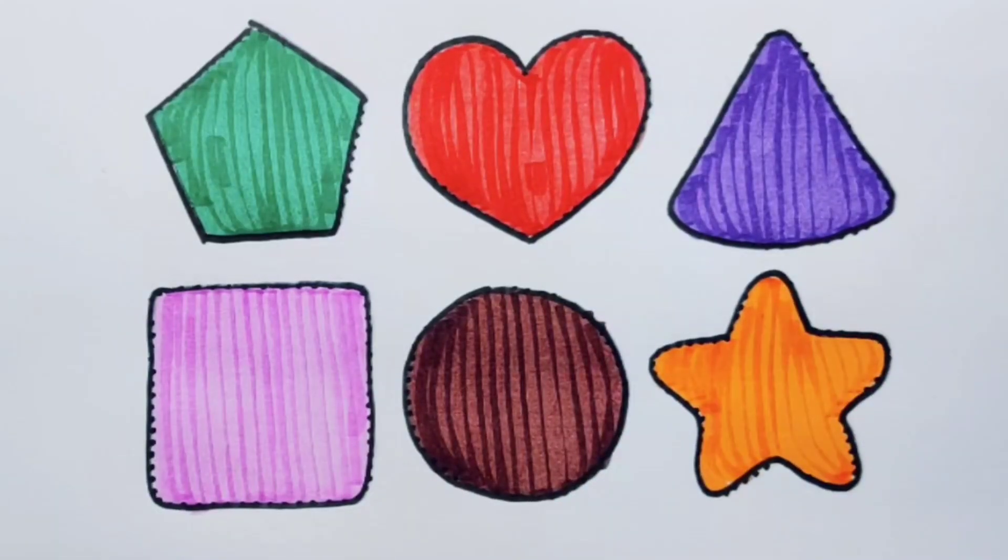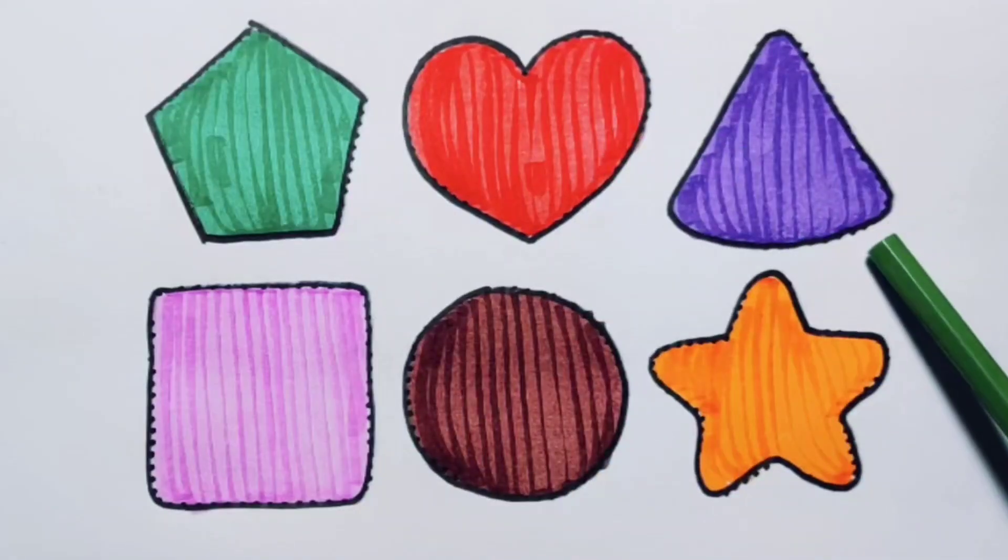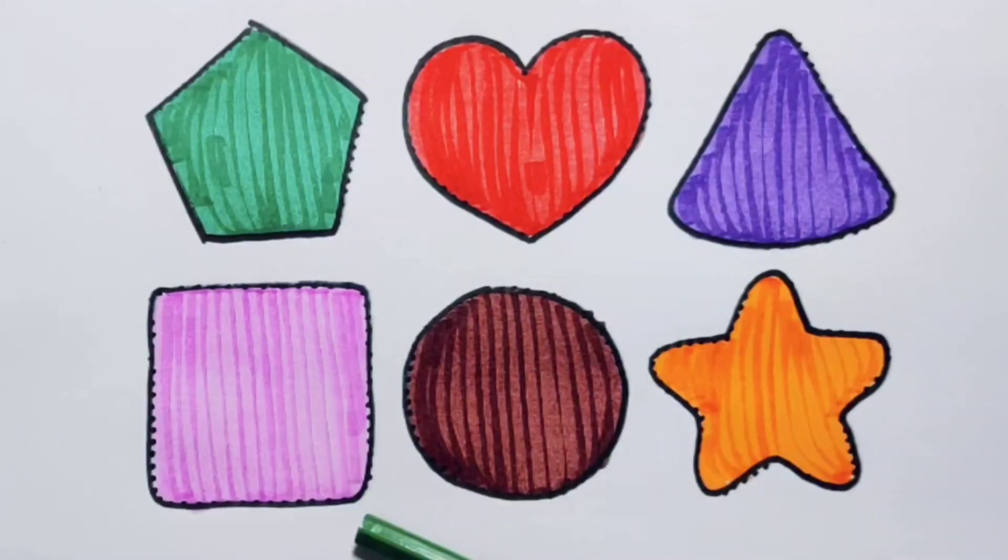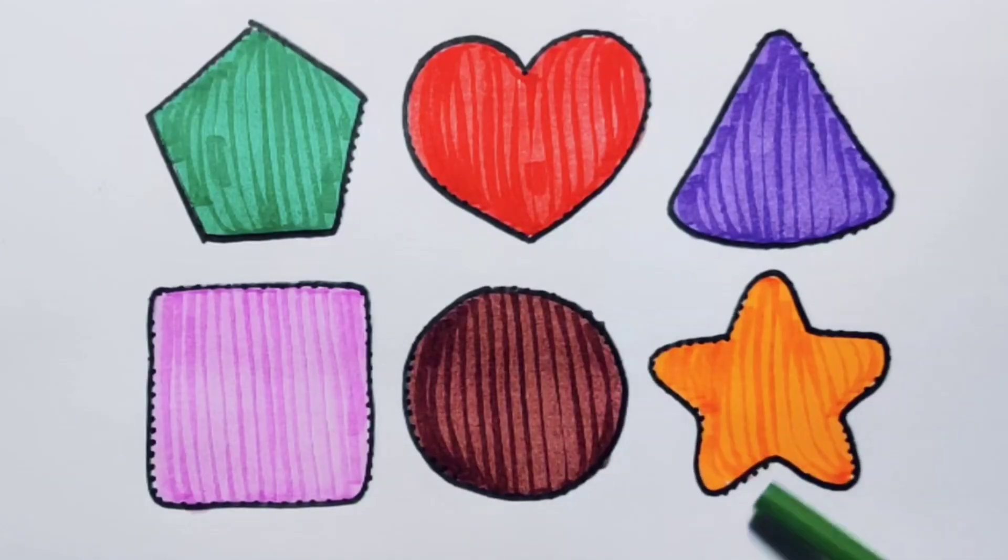What we learned: green color pentagon, red color heart, purple color triangle, pink color square, chocolate color circle, orange color star.